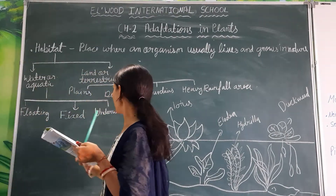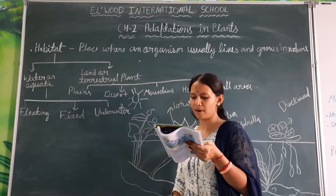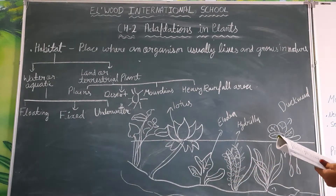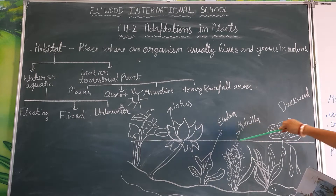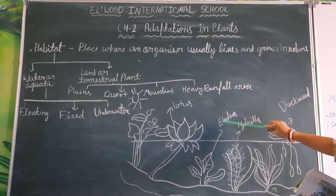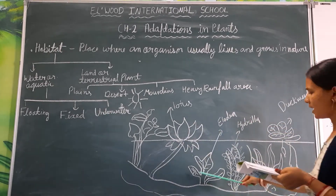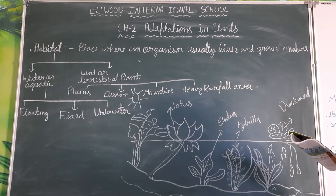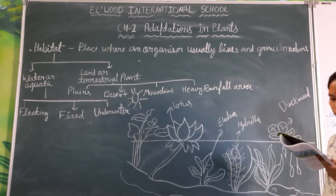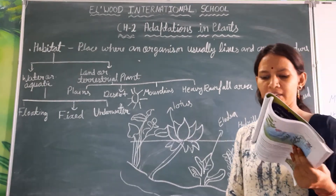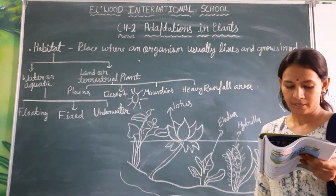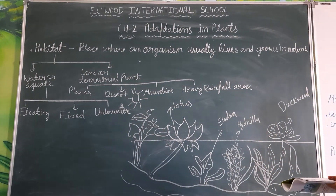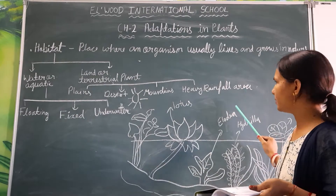Next is underwater plants. Underwater plants are fixed to the bottom of the water body and remain underwater — they do not reach the surface. Stomata are absent in these plants. Carbon dioxide comes out of the leaves to the surface. Underwater plants prepare food using sunlight that filters into the water. Examples are hydrilla and elodea.